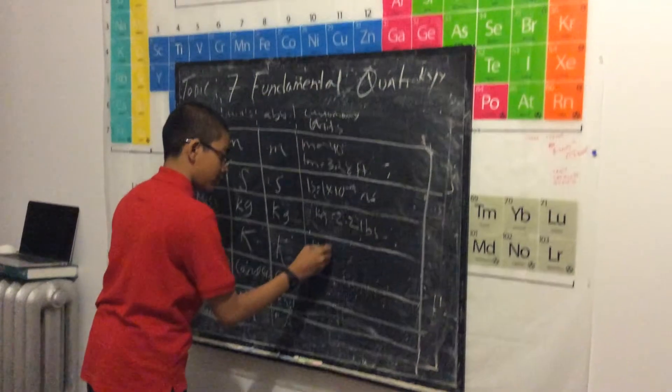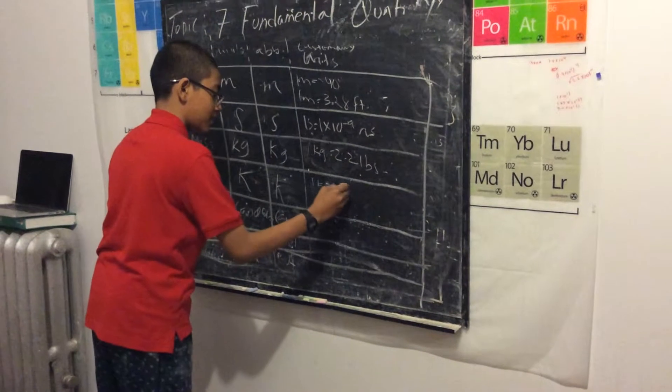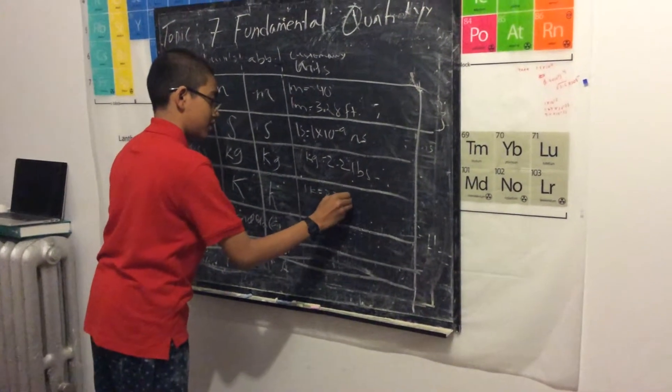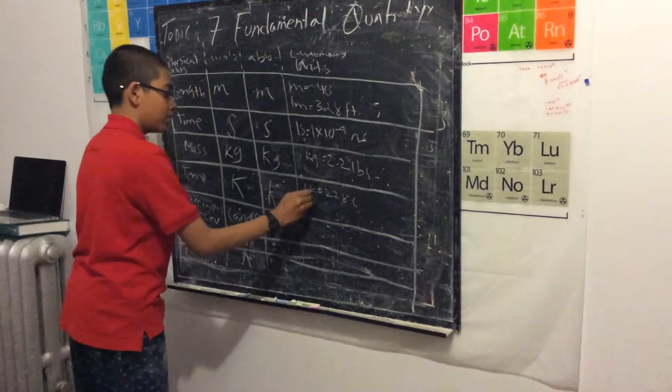One kilogram is about 2.2 pounds. One Kelvin is about 228 degrees Celsius.